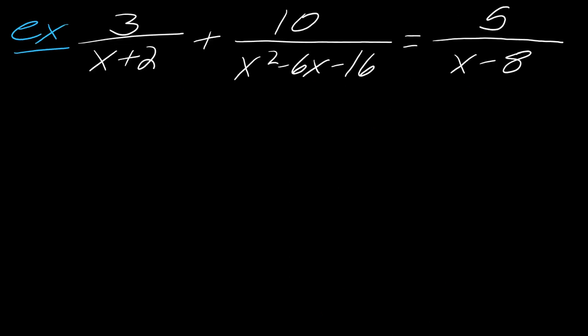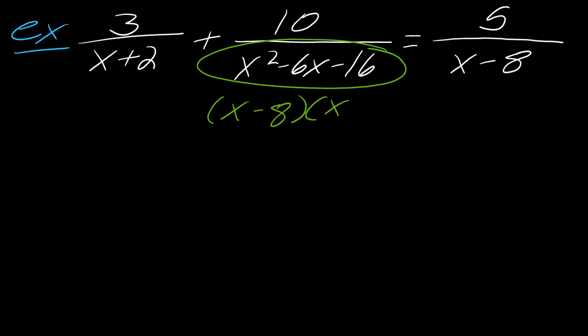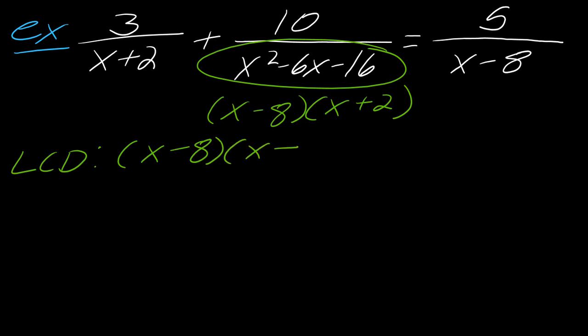Now let's ratchet up the difficulty. I've got 3/(x+2) plus 10/(x²−6x−16) equals 5/(x−8). What you want to do here is factor where you can. Notice that x²−6x−16 factors as (x−8)(x+2). So when finding the denominator: the first fraction has a factor of x+2; the middle has factors of x−8 and x+2; and the last has just x−8. So the LCD is just (x−8)(x+2).